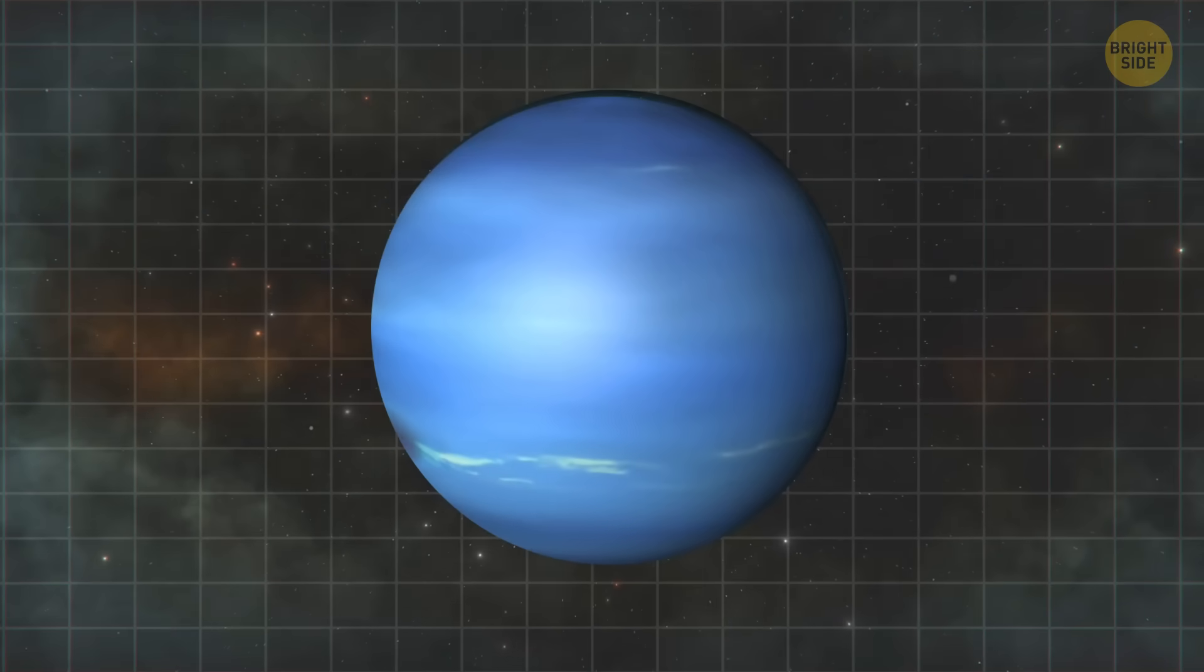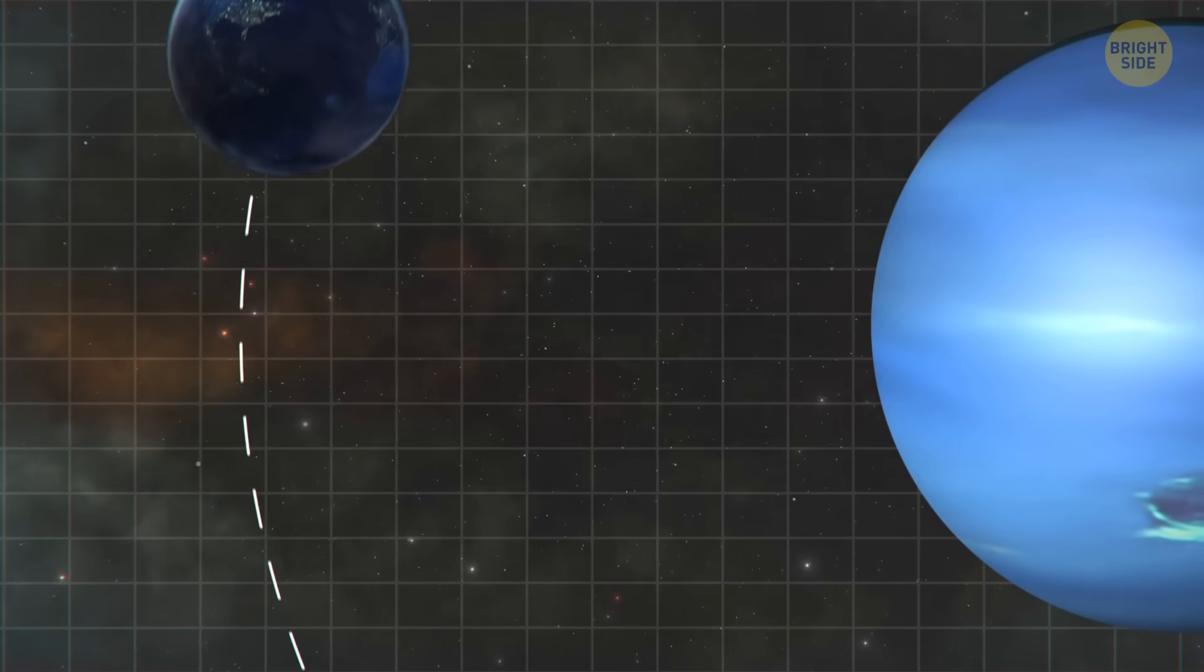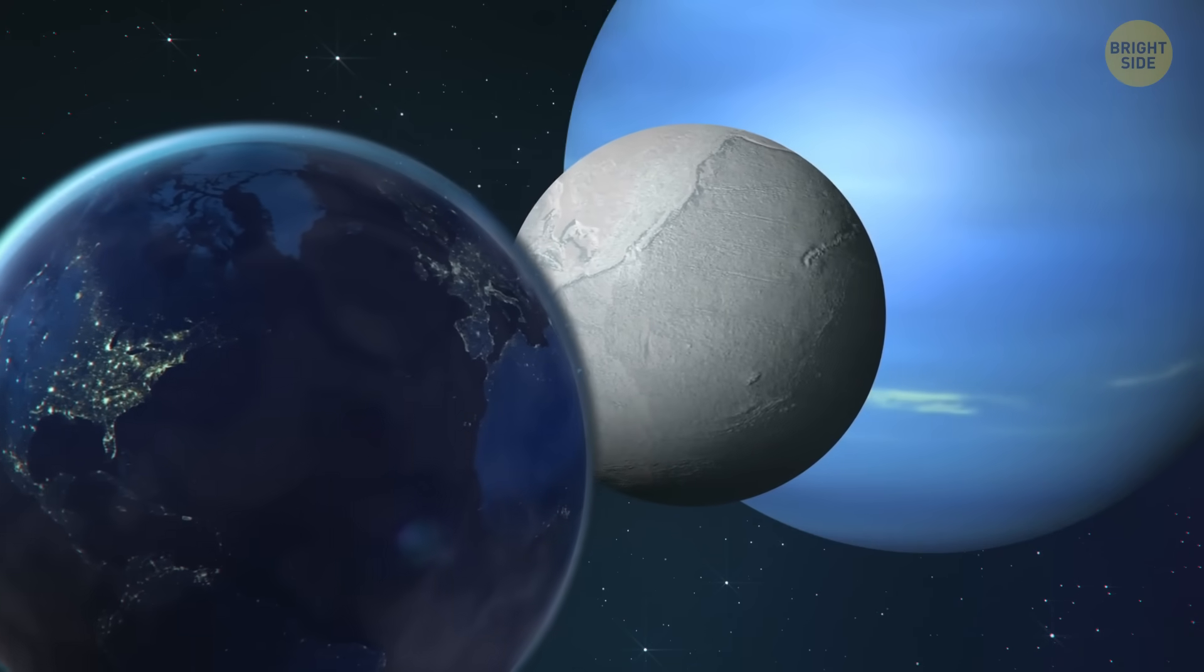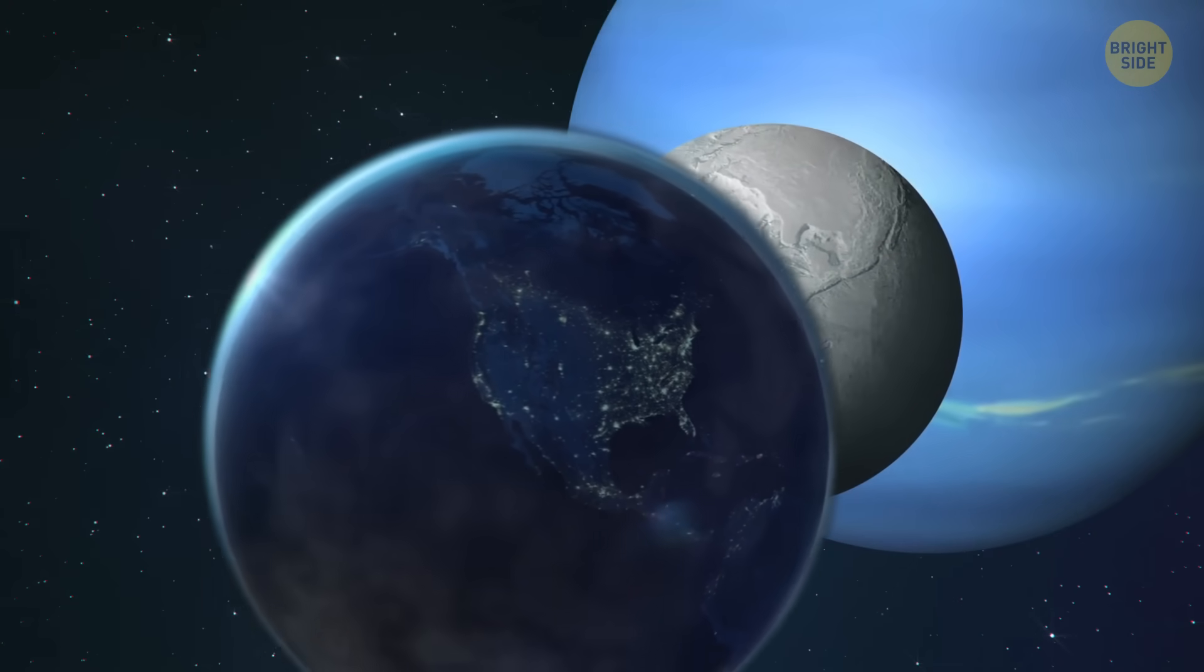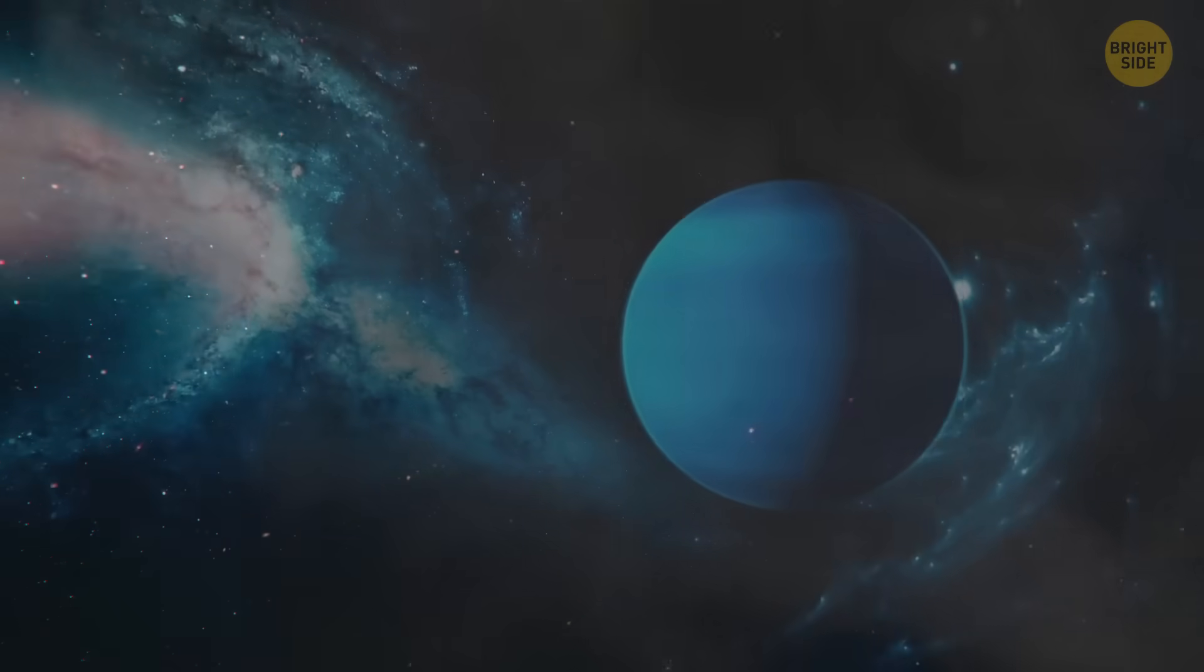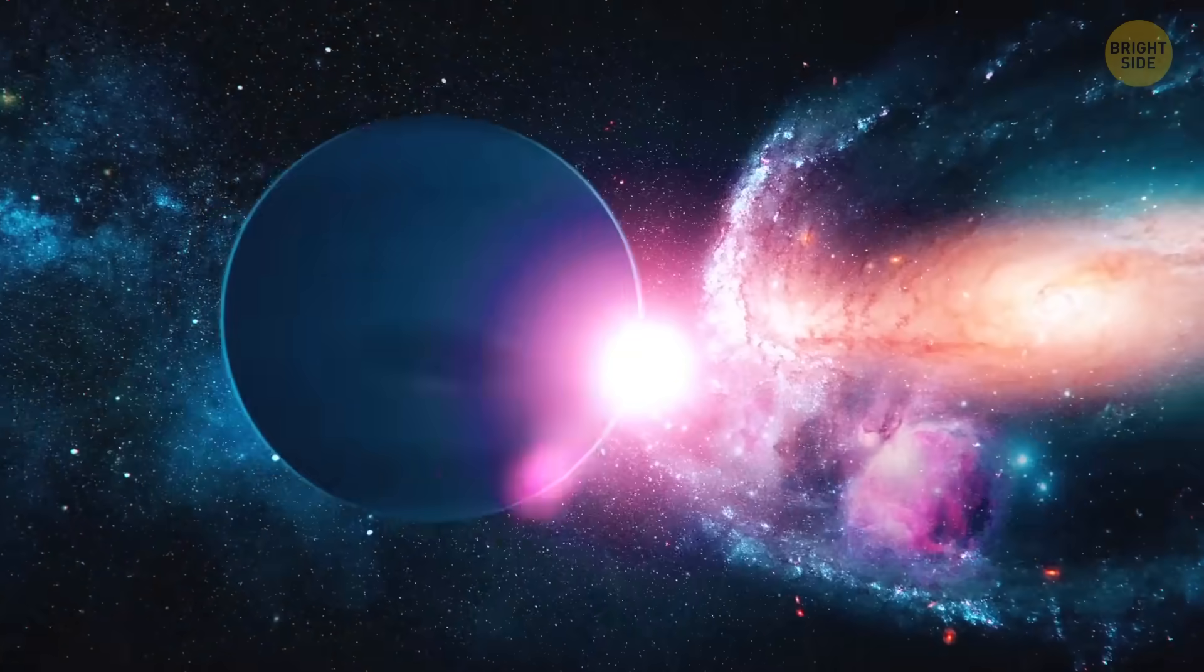Neptune is 17 times the mass of Earth, and its gravitational pull is much stronger. That's why our planet would end up as a satellite. It would orbit Neptune slightly further than its own largest moon, Triton. By the way, there would be a great risk of Earth colliding with this space body. But let's assume we were lucky enough not to cross paths with Neptune satellites.